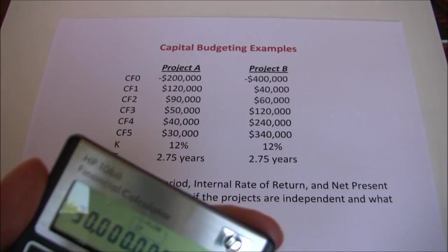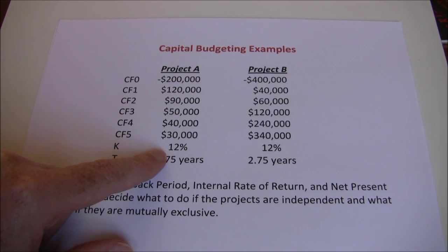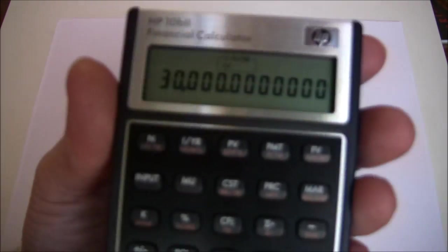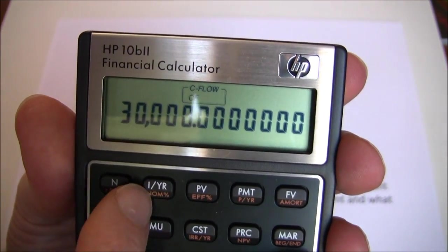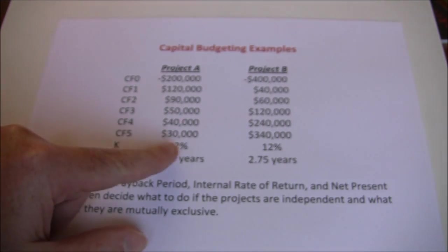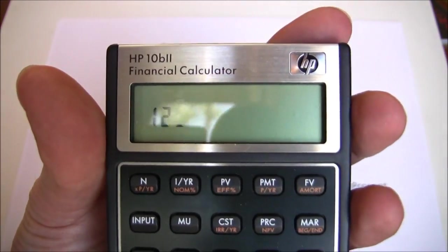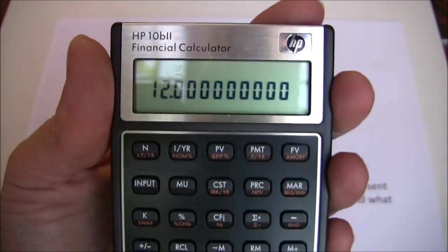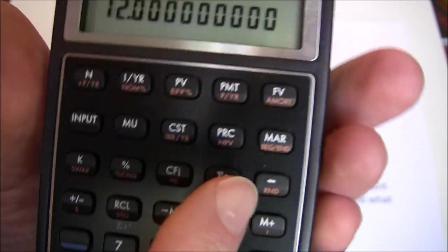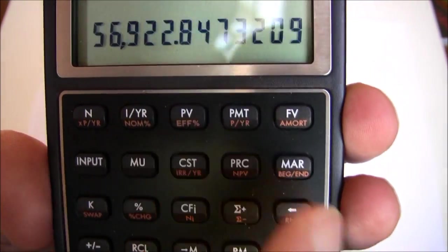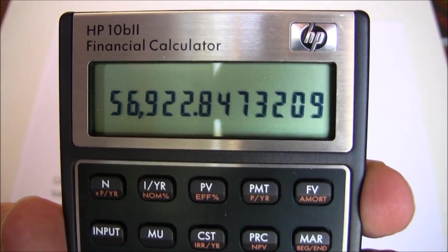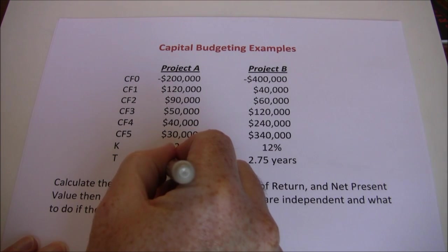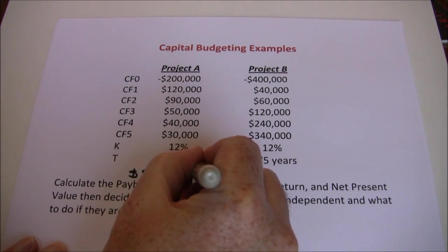Now all our cash flows are entered. The next thing we need to do is give it our discount rate. Sometimes students forget this step and end up just adding up the cash flows rather than computing net present value — so you've got to put in the discount rate. That's plugged into I/YR, same as with the five-key approach. That's 12% — just enter 12, not 0.12. Press I/YR. Now your discount rate is entered. Press shift, NPV, and there's your answer: $56,922.85. Go ahead and write that down: $56,922.85.